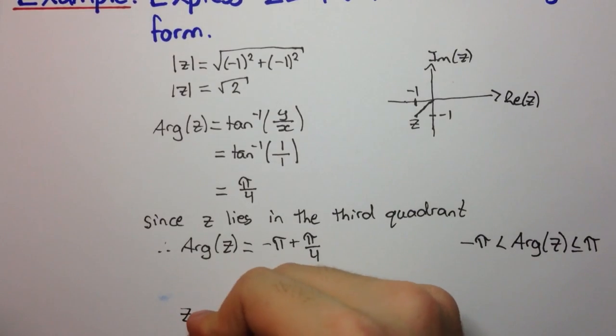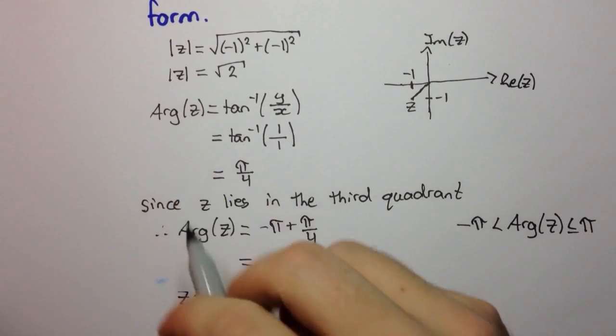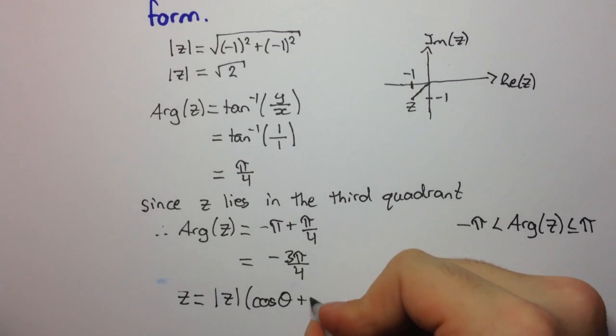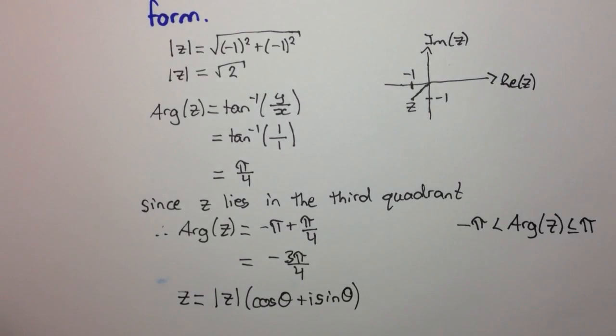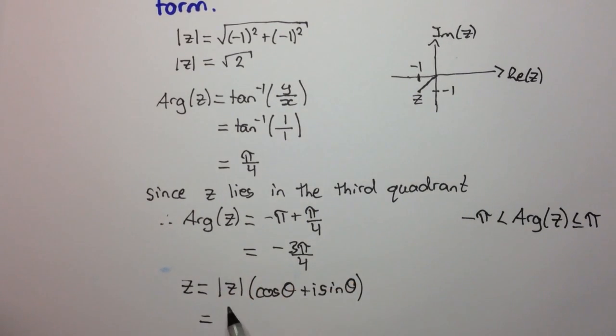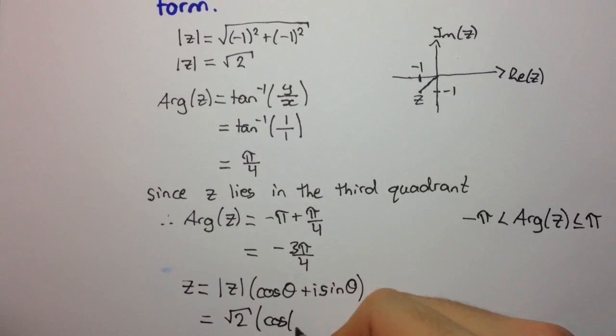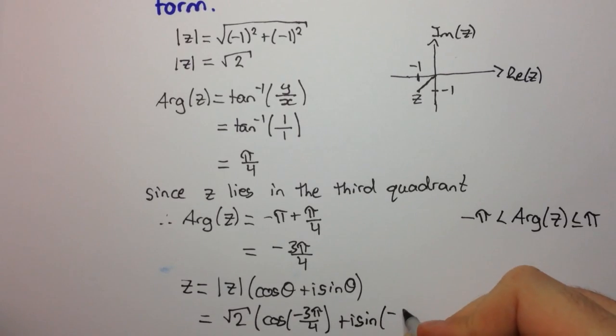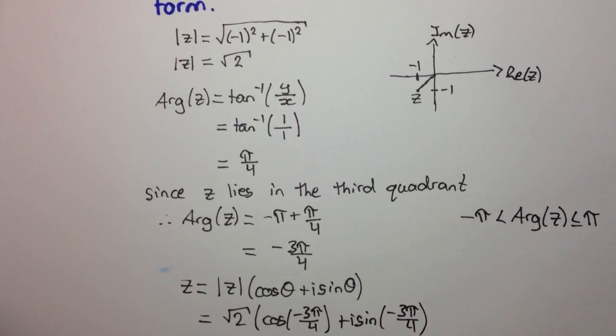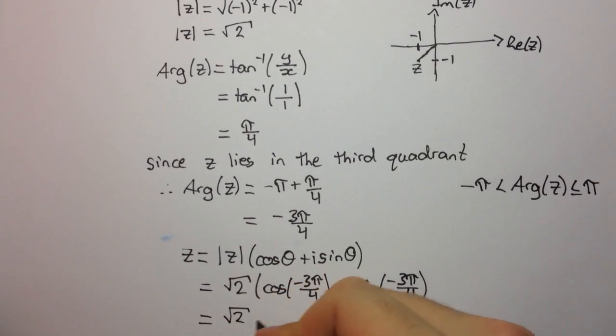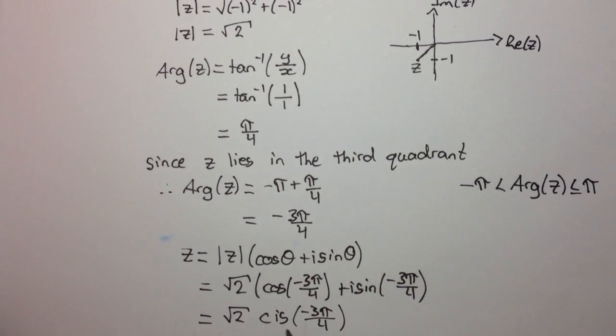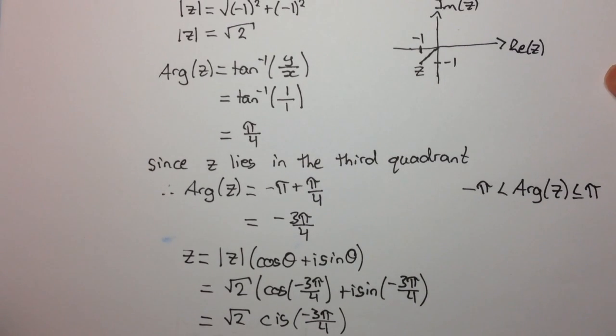So now we can just put it into mod-arg form. So z equals—this is the general form—the modulus of z times cos theta plus i sine theta. And so modulus of z is root 2, cos of negative 3 pi on 4 plus i sine of negative 3 pi on 4. And if you really wanted to, you can write root 2 cis negative 3 pi on 4. Remember, cis is just an abbreviation of cos plus i sine. And that's the end of that example.